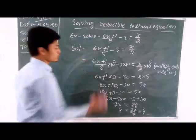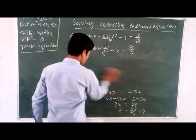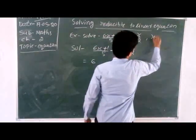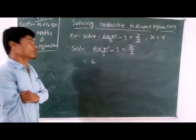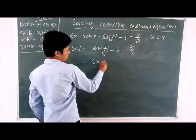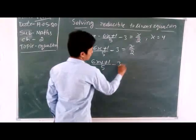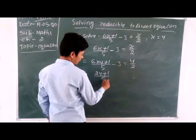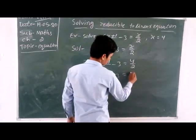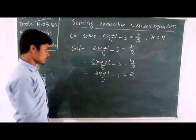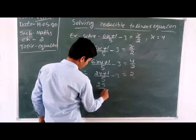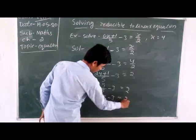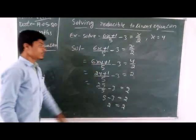Now we verify the particular value of the equation. We put the value of x equals 4 back into the equation. So: (6 into 4 plus 1)/5 minus 3 equals 4/2. That gives (24 plus 1)/5 minus 3 equals 2. So 25/5 minus 3 equals 2. That is 5 minus 3 equals 2. Therefore 2 equals 2 — LHS equals RHS. The answer is correct.